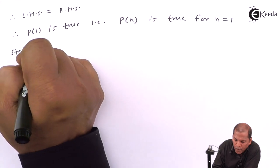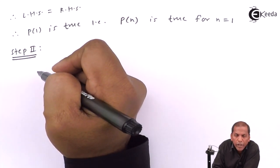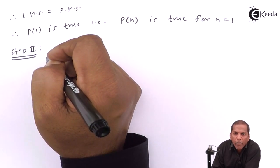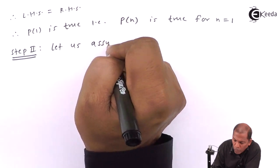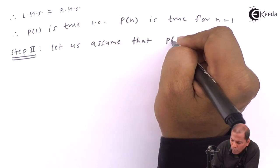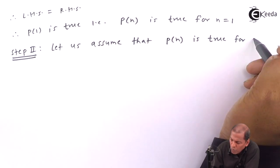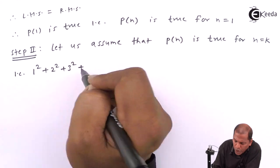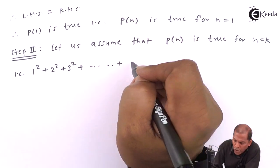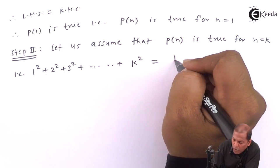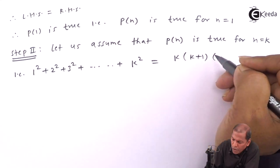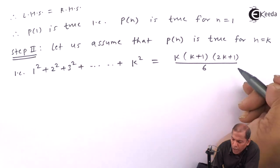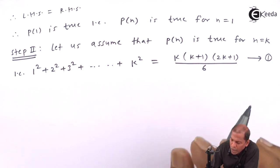Now we consider step number 2. In step 2, let us assume that P(n) is true for n equal to K. That is: 1 square plus 2 square plus 3 square plus dot dot plus K square is equal to K(K+1)(2K+1) divided by 6. Let us denote this as equation 1.